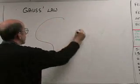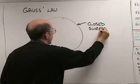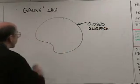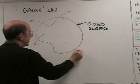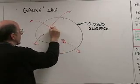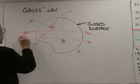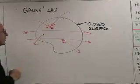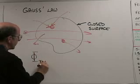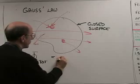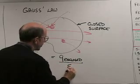Gauss's Law says that if you have a closed surface and you measure the total electric flux that goes through that surface — which might be caused by charges located inside the surface, or by external fields from objects outside — the total flux into that closed surface equals the charge enclosed in the surface divided by a constant we'll call epsilon zero.